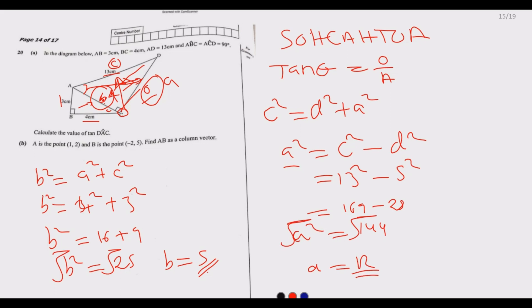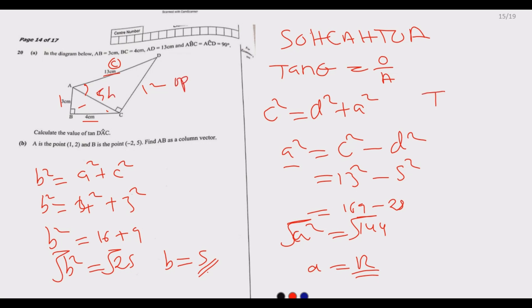We take the positive value, so AC equals 12. Now we can clearly see: the opposite side to angle DAC is 12, and the adjacent side is 5. Therefore tan DAC equals opposite over adjacent, which is 12 over 5.